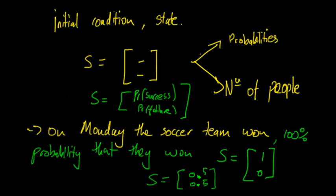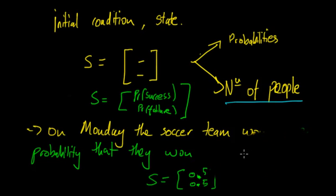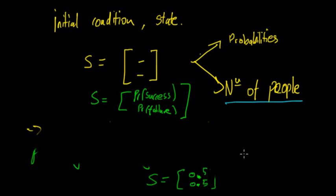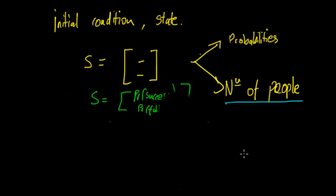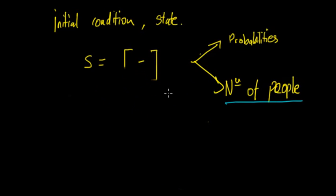Now the other one is the number of people. If you remember with Markov chains, there are two general types: probability, and working out how many people. I previously used a pizza example.